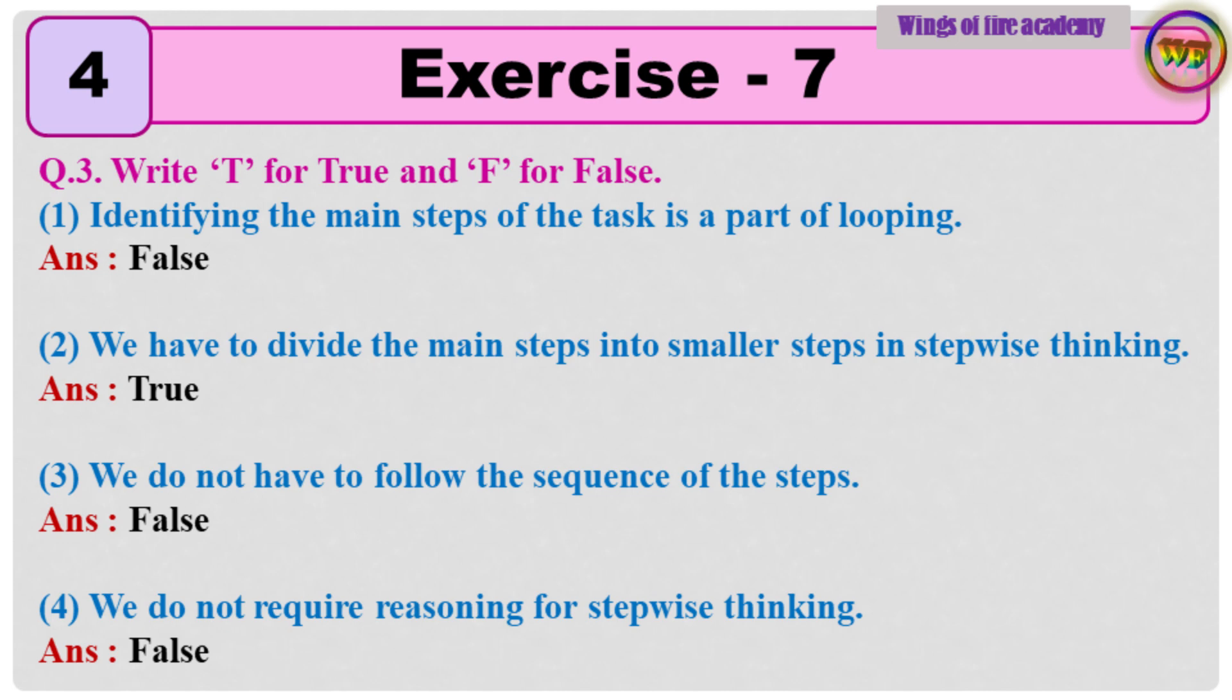Question 3. Write T for true and F for false. 1. Identifying the main steps of the task is a part of looping. Answer. False. 2. We have to divide the main steps into smaller steps in stepwise thinking. Answer. True.